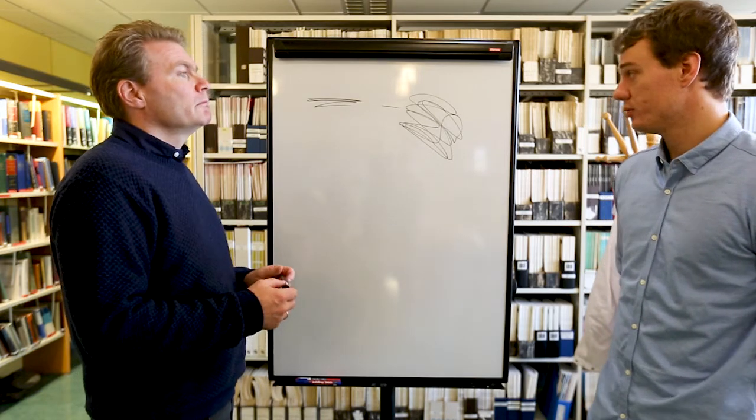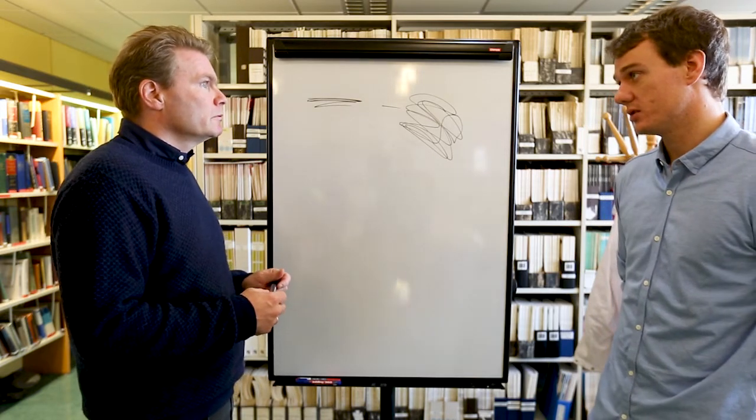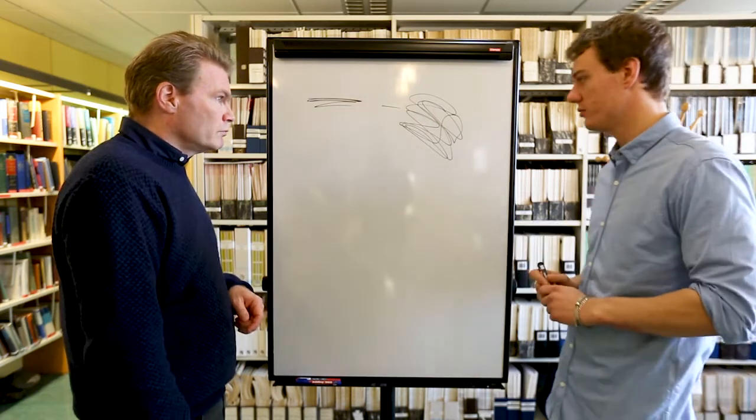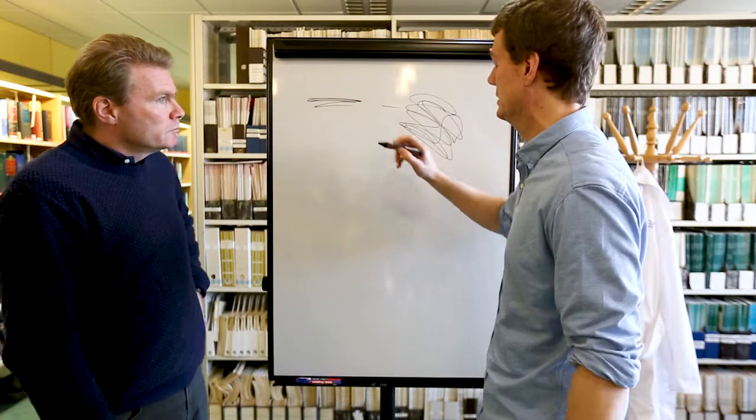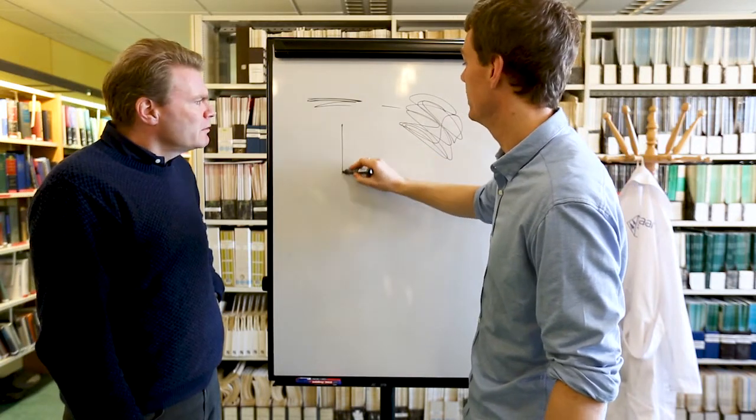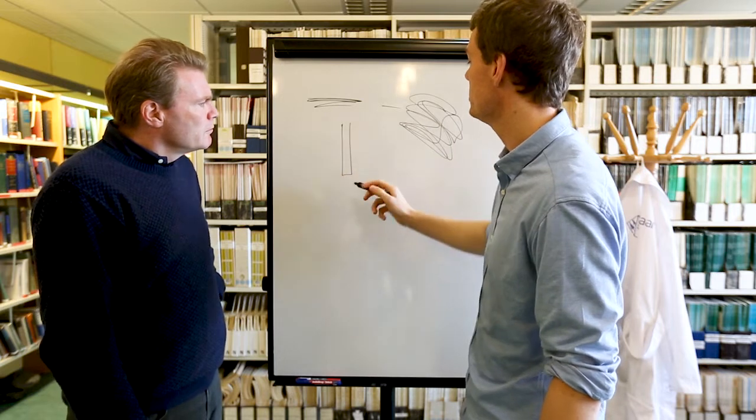We have Ultra-Turrax, which is a high shear piece of equipment for small scale, very small scale. This is what we use for analysis, and it has a very fast rotating blade at the bottom.